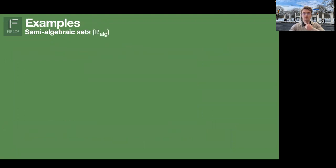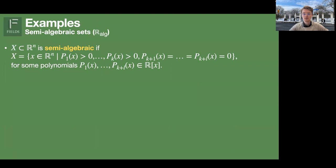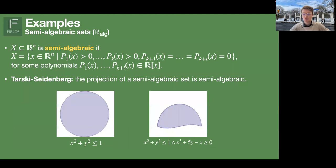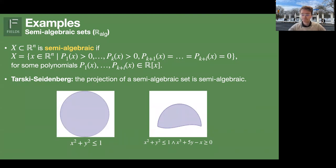Now, an actual example. We look at semi-algebraic sets — the structure is usually denoted R̄ or R_alg. Semi-algebraic sets are all sets you can write as determined by polynomial equalities and inequalities. It's a famous theorem of Tarski that the projection of such a set is again such a set — this class is closed under projection. Two examples: the first is just a disk, clearly given by a polynomial inequality, and we can even cut out a region from this disk to get another semi-algebraic set.